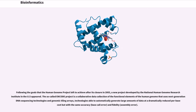Following the goals that the Human Genome Project left to achieve after its closure in 2003, a new project developed by the National Human Genome Research Institute in the U.S. appeared. The so-called ENCODE Project is a collaborative data collection of the functional elements of the human genome that uses next-generation sequencing technologies and genomic tiling arrays — technologies able to automatically generate large amounts of data at a dramatically reduced per-base cost but with the same accuracy, base call error and fidelity, and assembly error.